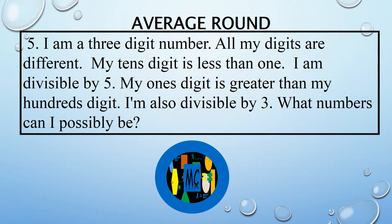I am a three-digit number. All my digits are different. My tens digit is less than one. I am divisible by five. My ones digit is greater than my hundreds digit. I am also divisible by three. What numbers can I possibly be?